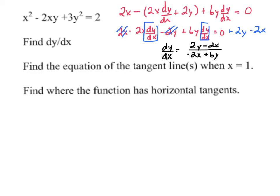Now, finding the equation of the tangent line when x is equal to 1. So we have to go back to the original, and we're going to plug 1 in. Let's just plug 1 in. So we've got 1 squared minus 2 times 1 times y. I like to get everything on the same side, so let me just go down here.